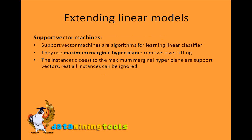The next topic is extending the linear model. We already dealt with linear models and the perceptron method. The first technique is support vector machines, an algorithm for learning linear classifiers using the maximum marginal hyperplane technique. By using this technique we remove overfitting — instances closest to the maximum marginal hyperplane are called support vectors, and only they are considered; all other instances can be ignored.